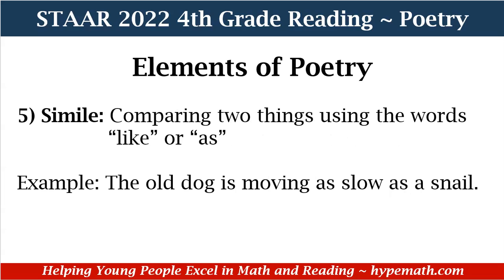Number five, we have simile — comparing two things using the words 'like' or 'as.' Example: 'The old dog is moving as slow as a snail.' The two things we're comparing are the old dog and the snail, and the comparative word we're using is 'as.'